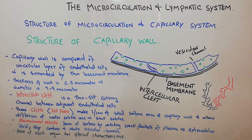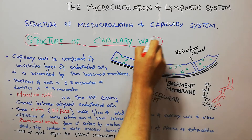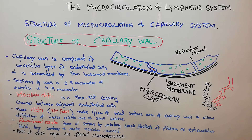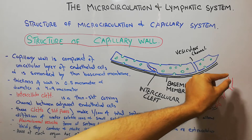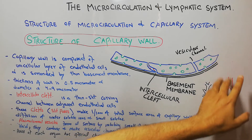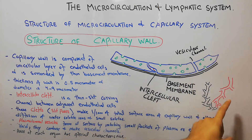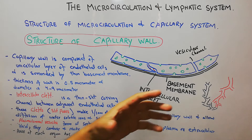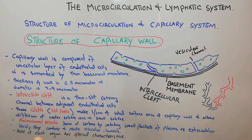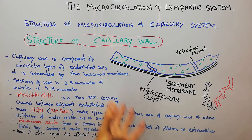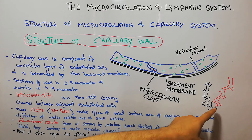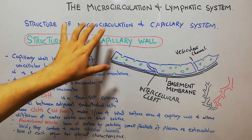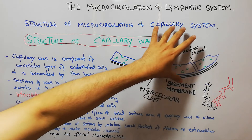Today in this lecture we are going to discuss the structure of the capillary wall. We have started a new series of lectures about the microcirculation and lymphatic systems. We have already discussed the structure of the microcirculation and capillary system — how the aorta divides to make large arteries, how the arteries divide to make arterioles, and how arterioles divide to finally make capillaries. It is at the level of capillaries that the exchange of nutrients between the tissues occurs: nutrients go into the tissue and waste material goes into the blood.